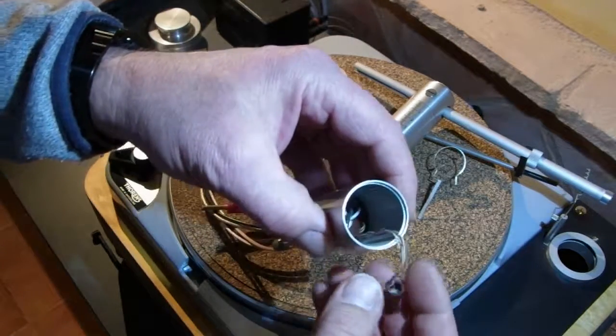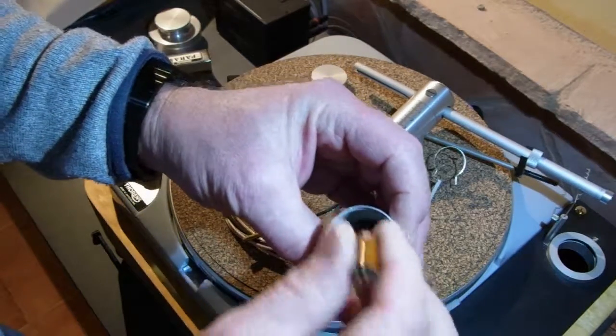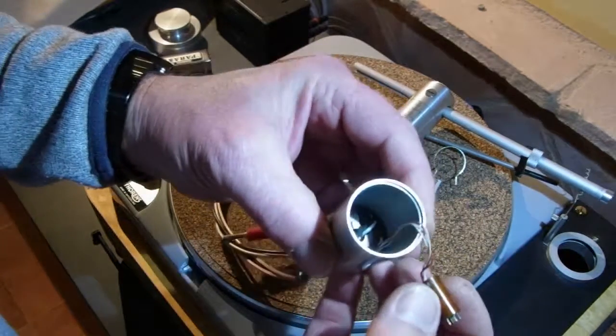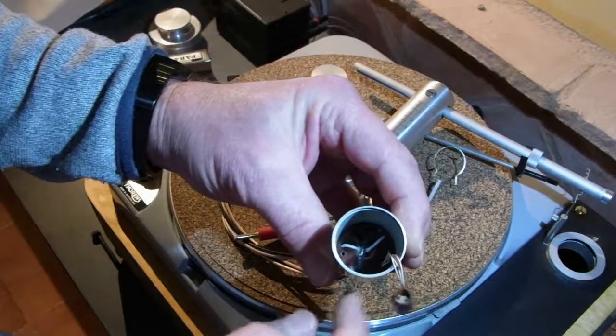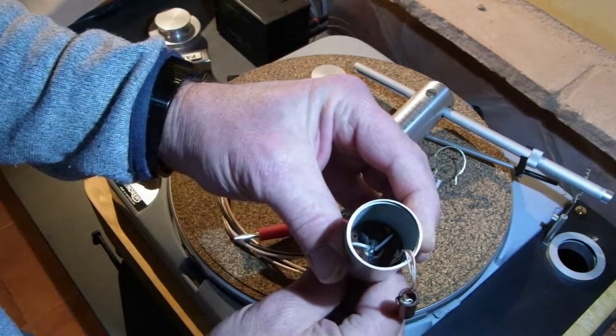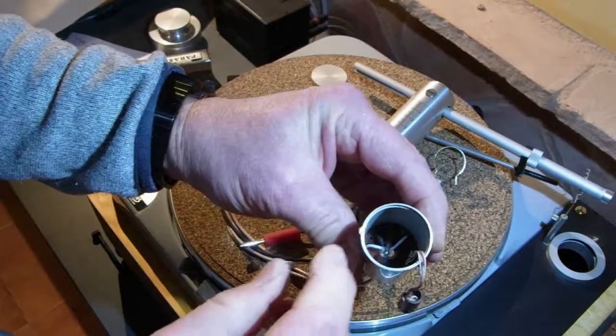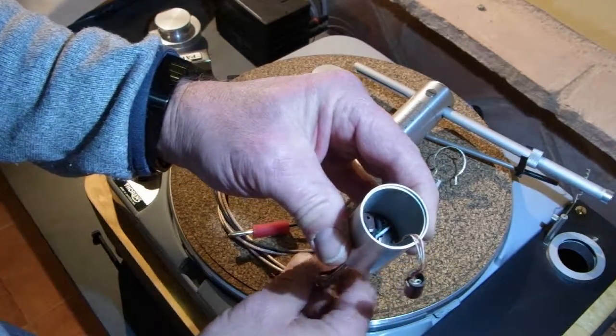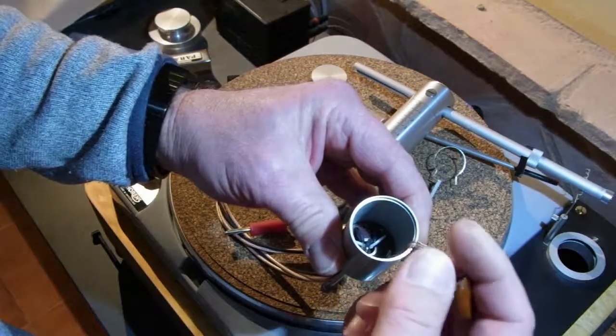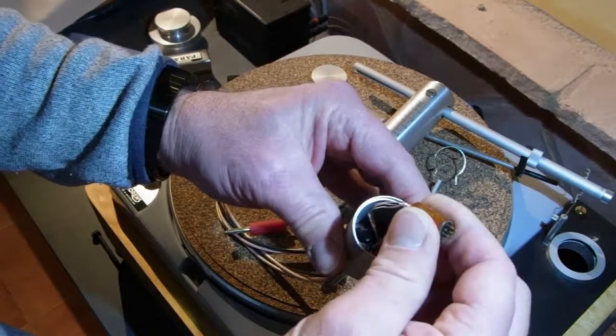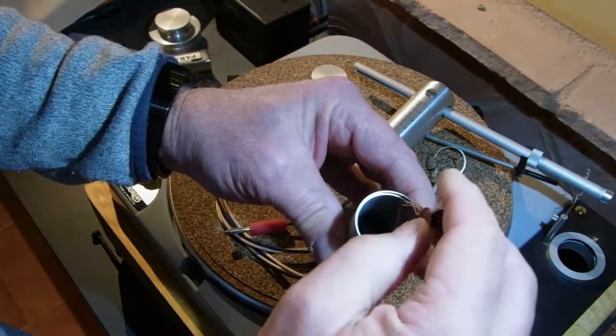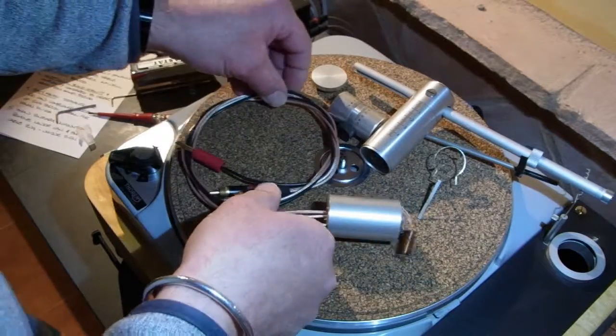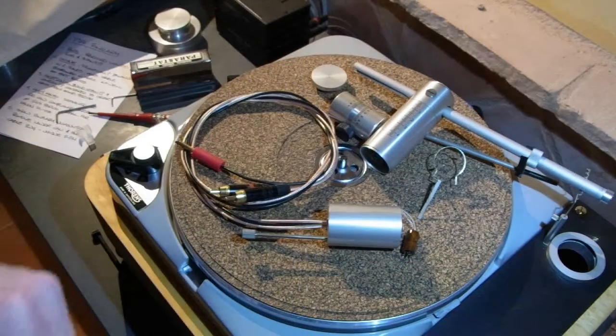Inside the shielding can here, as we saw earlier, we have the 5-pin connector. But in the bottom of the can, we have a small circuit board, which is where the connections between the incoming phono cables are connected to the tonearm cable DIN connector here. And that's really all there is to this tonearm.